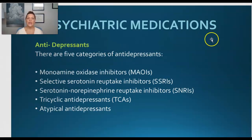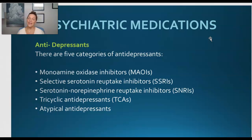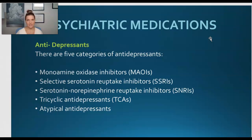So antidepressants — there are five main categories. They include the monoamine oxidase inhibitors, or MAOIs; the selective serotonin reuptake inhibitors, or SSRIs; the serotonin-norepinephrine reuptake inhibitors, also known as SNRIs; the tricyclic antidepressants; and then a newer group called atypical antidepressants.